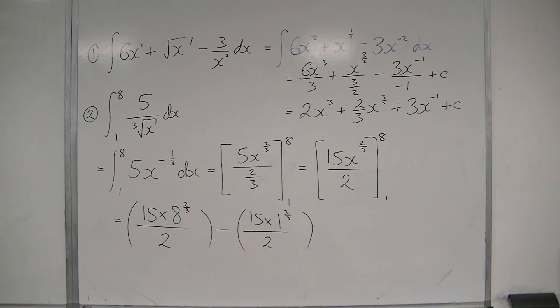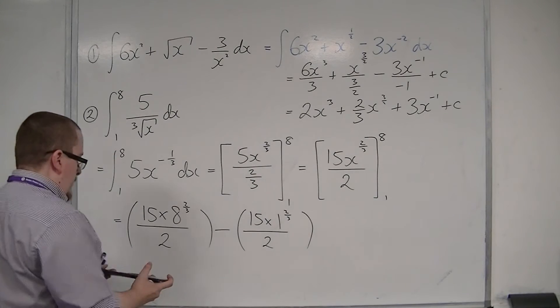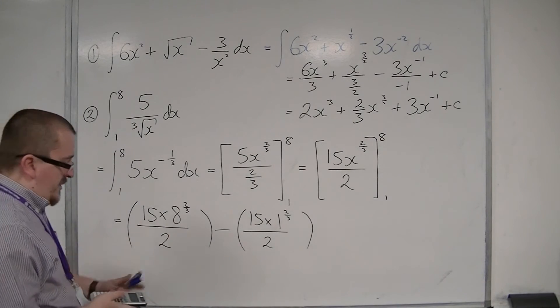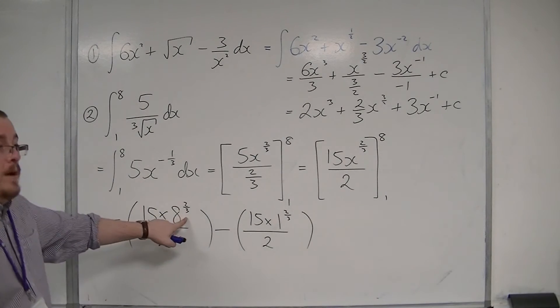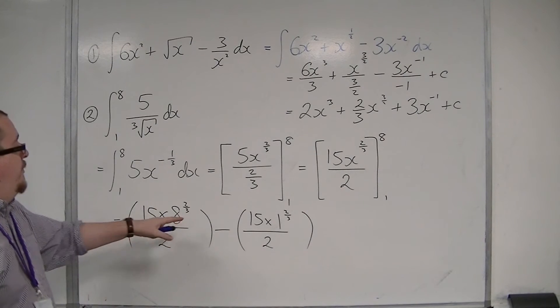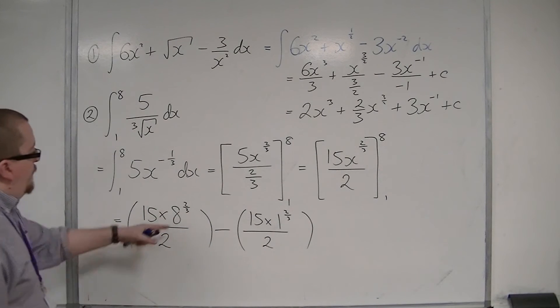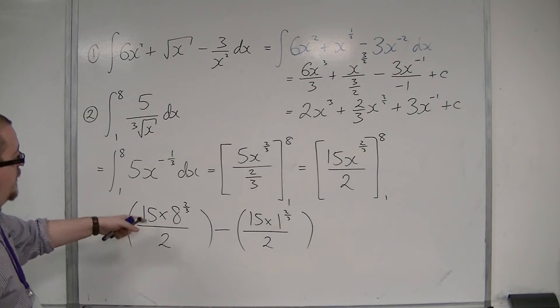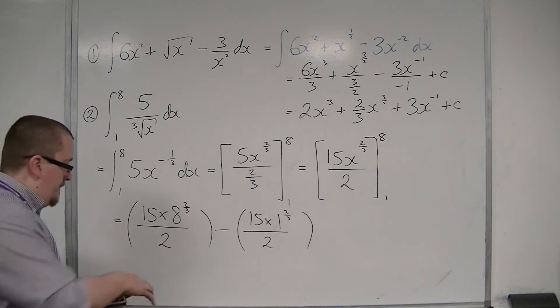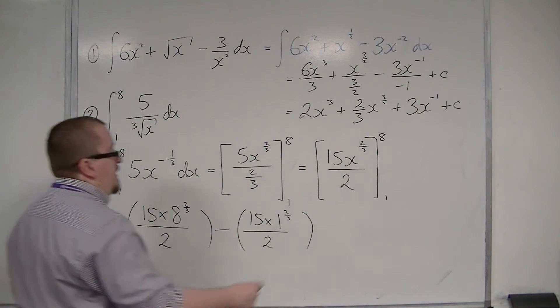Ordinarily I would use a calculator here. Now 8 to the power of 2 thirds is 2. 2 squared is 4. 4 divided by 2 is 2. So 2 lots of 15 is 30. So that will evaluate to 30, that first bracket.